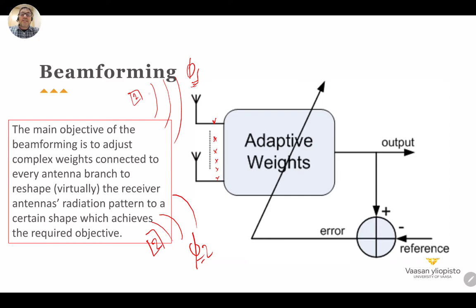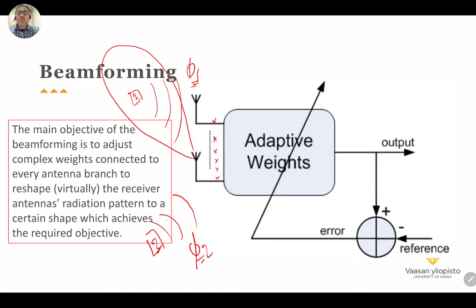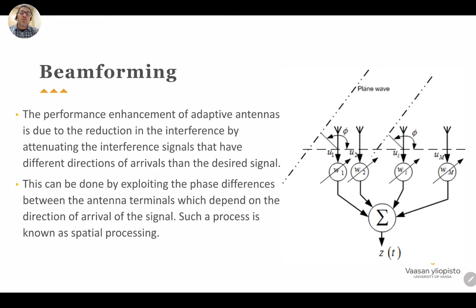So we can enhance the signal from terminal one and reduce the signal from terminal two. It is as if the antenna radiation pattern is virtually directed only toward the desired user, and the interference from the other user is depressed. We control the virtual radiation pattern by adjusting the adaptive weights. The wave arrives as a plane wave — we assume this because we are far from the transmitter — and the phase depends on the azimuth angle phi, which we control through the antenna weights.